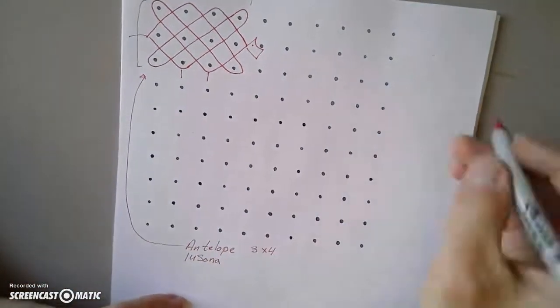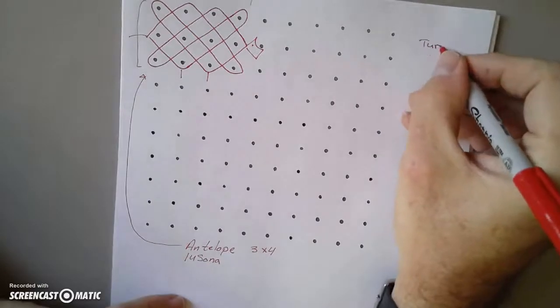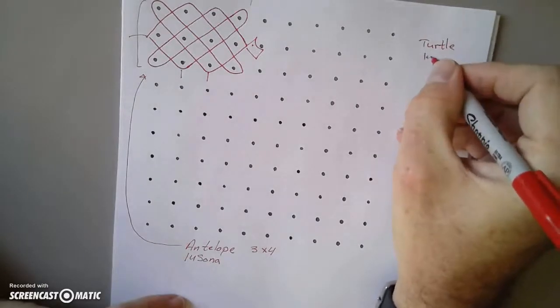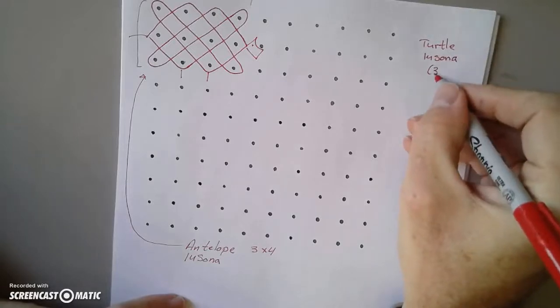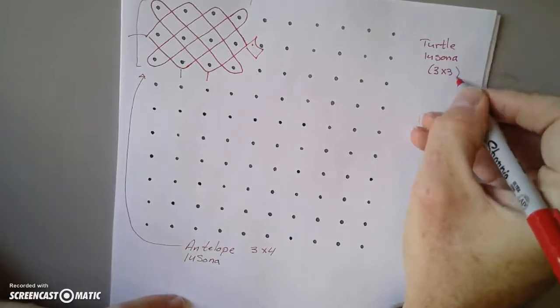For the turtle, let's do the turtle Lusona. Remember Lusona is singular. That's a three by three grid.